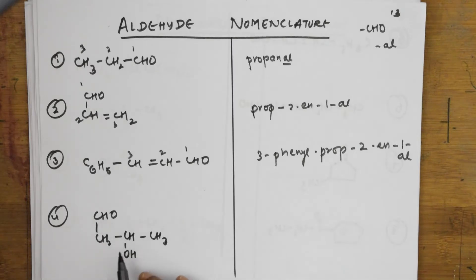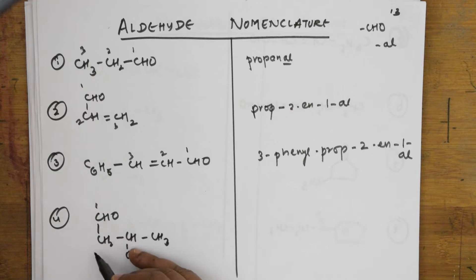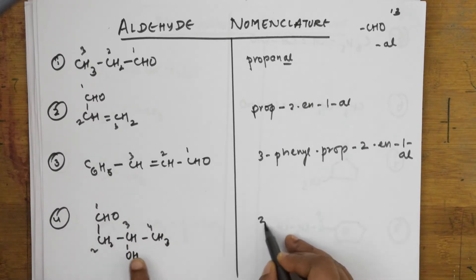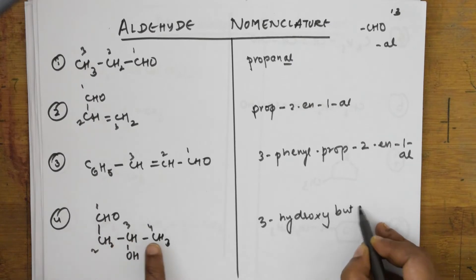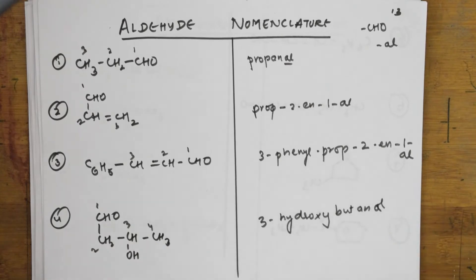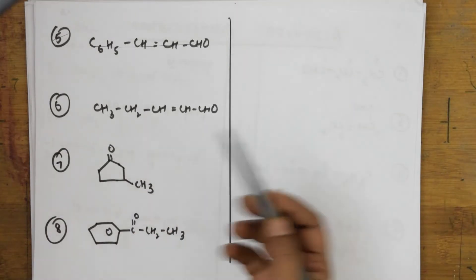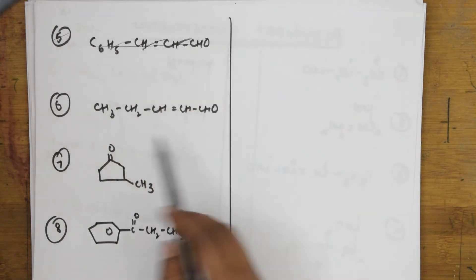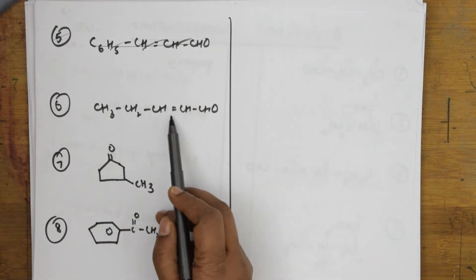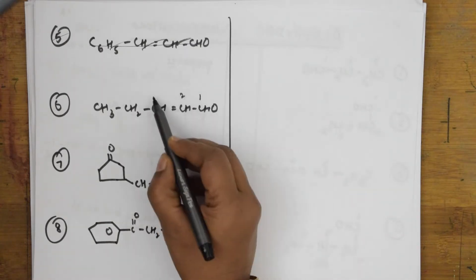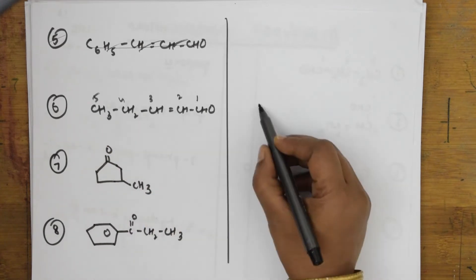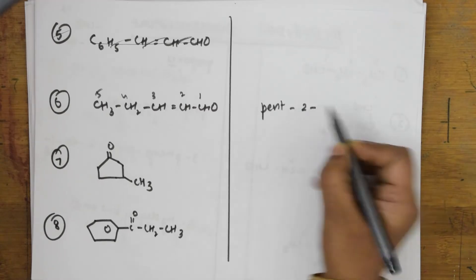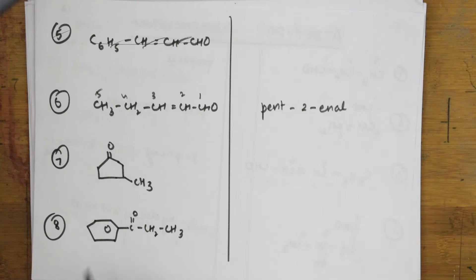Let us name the next compound. The aldehyde group should get position one, two, three, and four — so this is butanal. You have a hydroxy substituent at the third carbon, so name it 3-hydroxybutanal. Now in this example, you have an aldehyde group and an alkene. The parent chain is pent-, and you name it pent-2-enal.